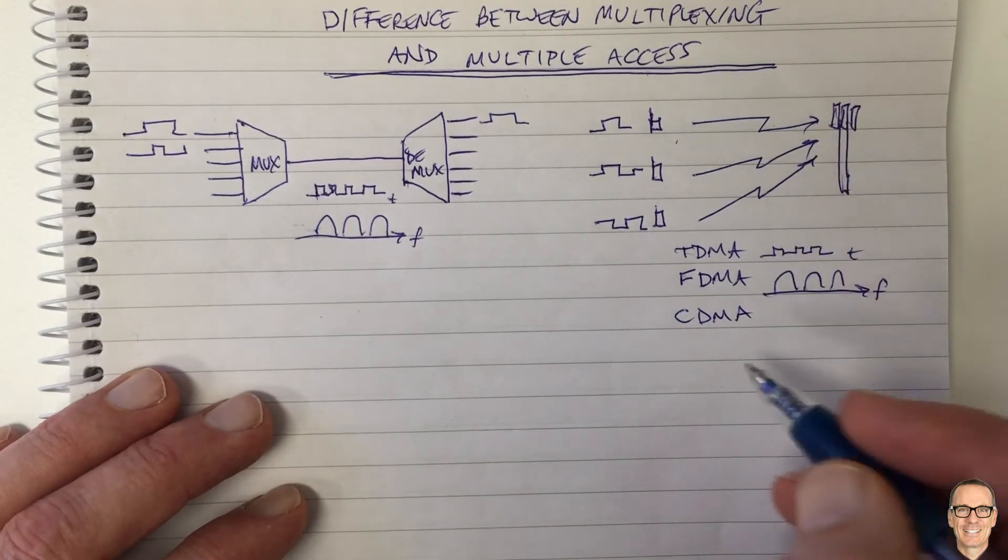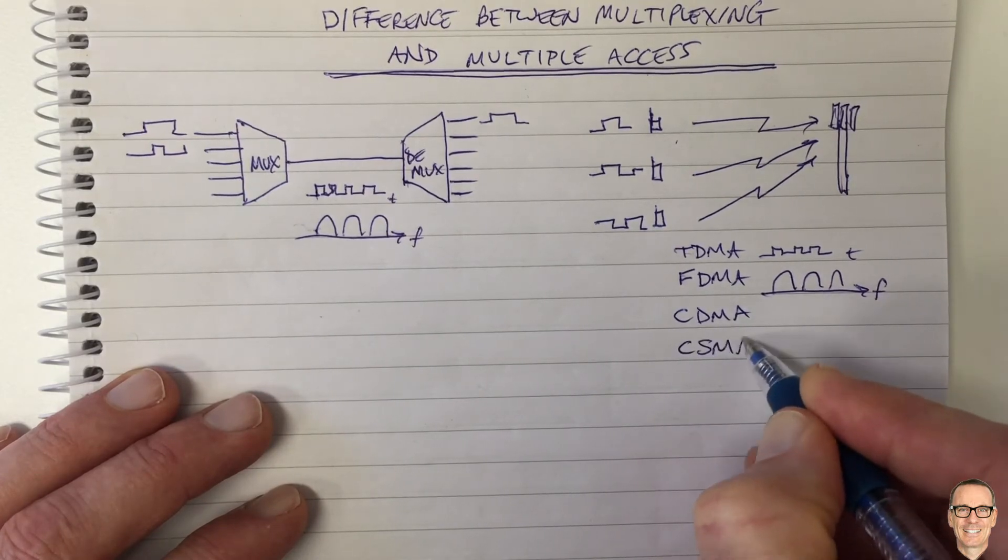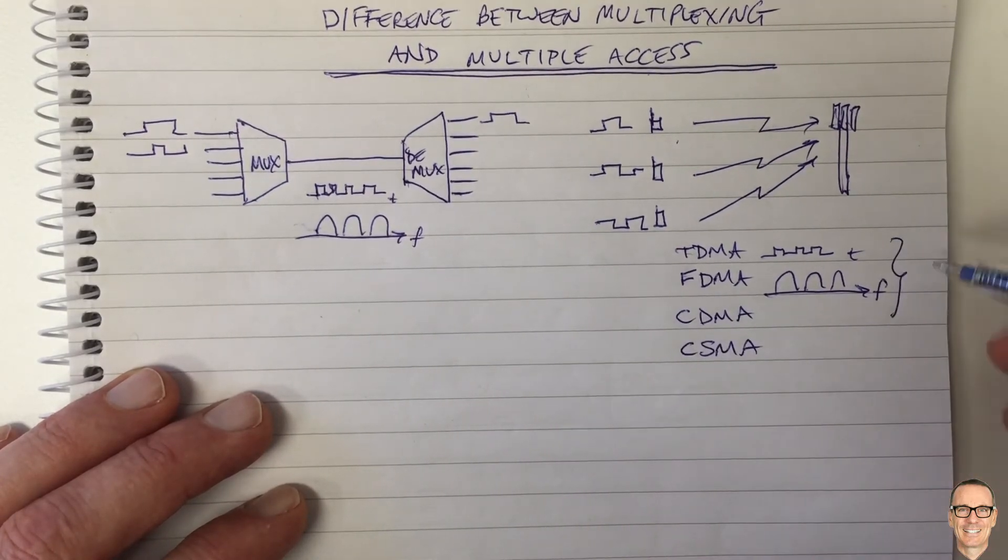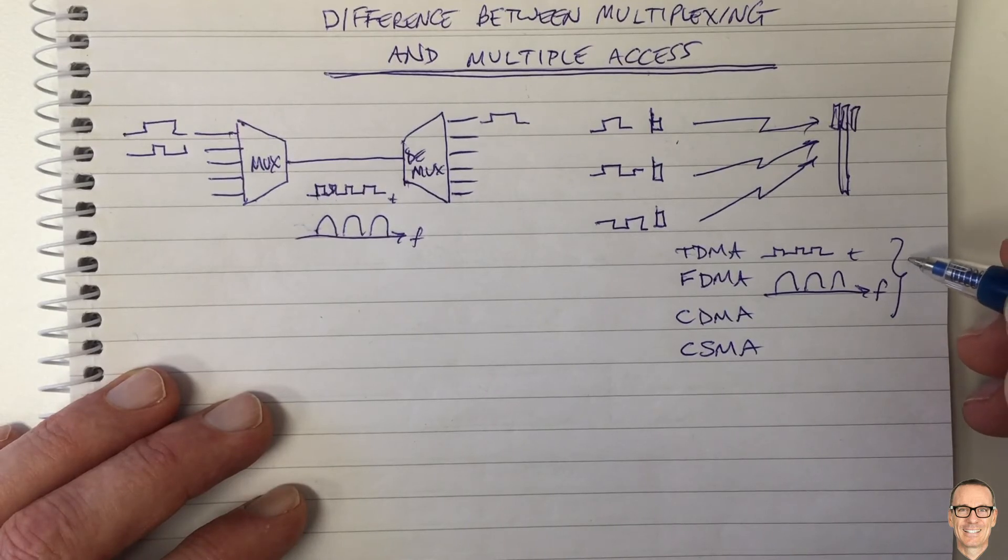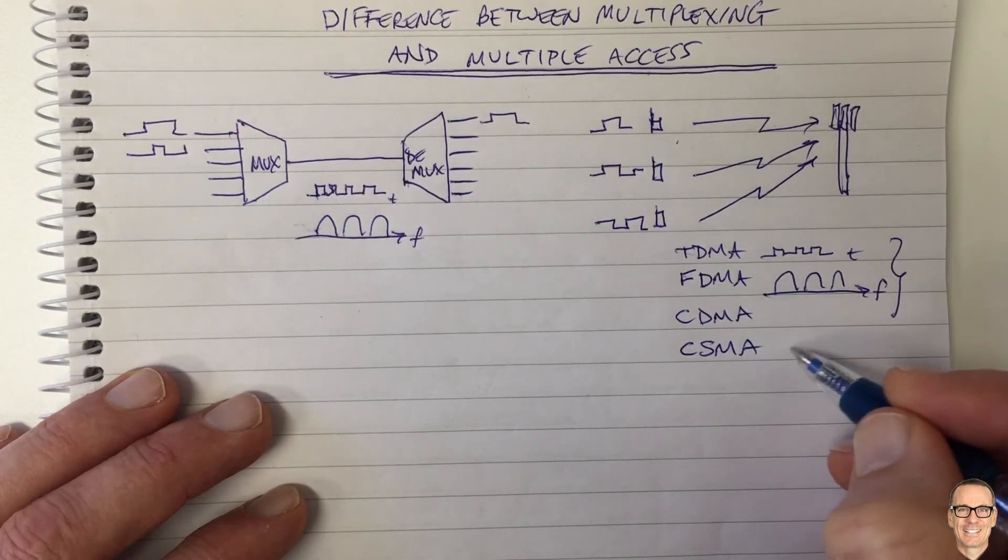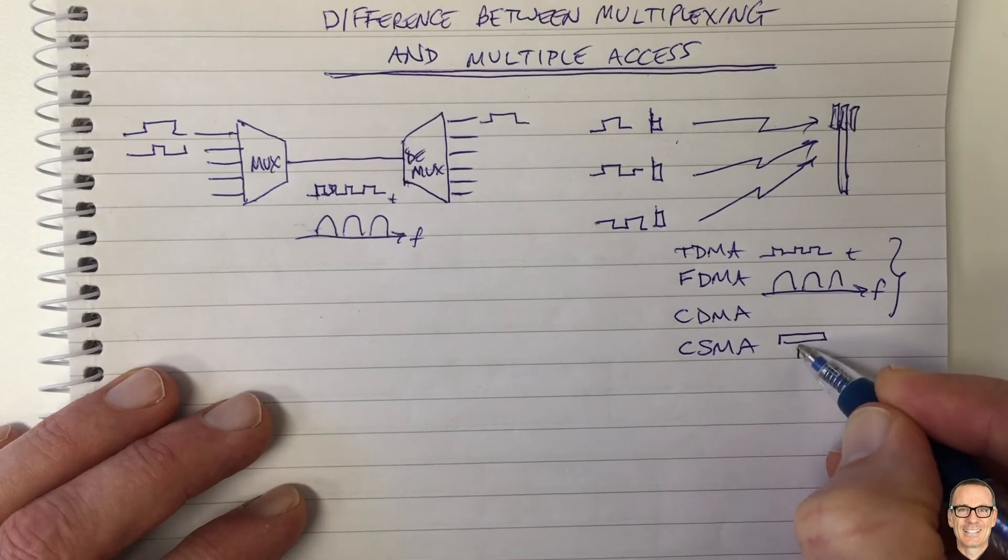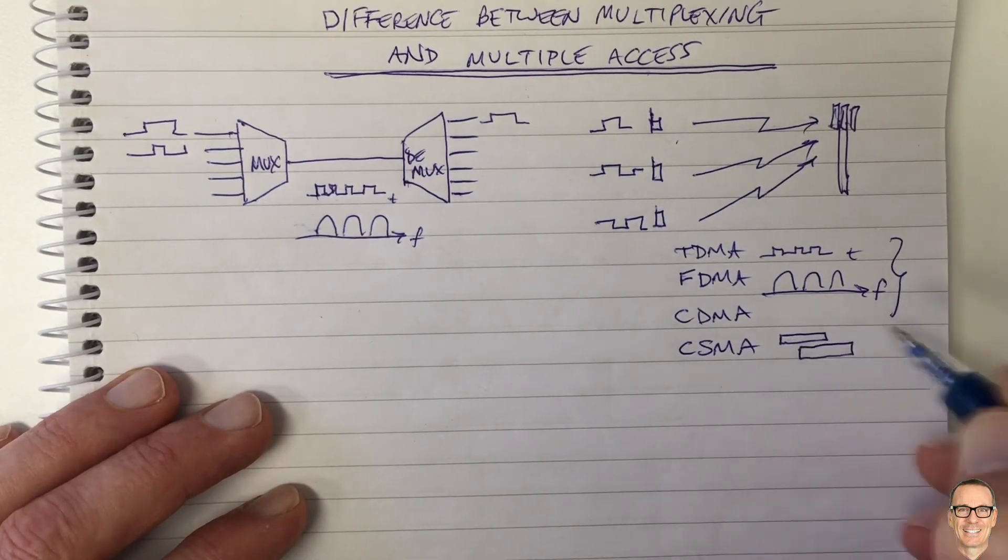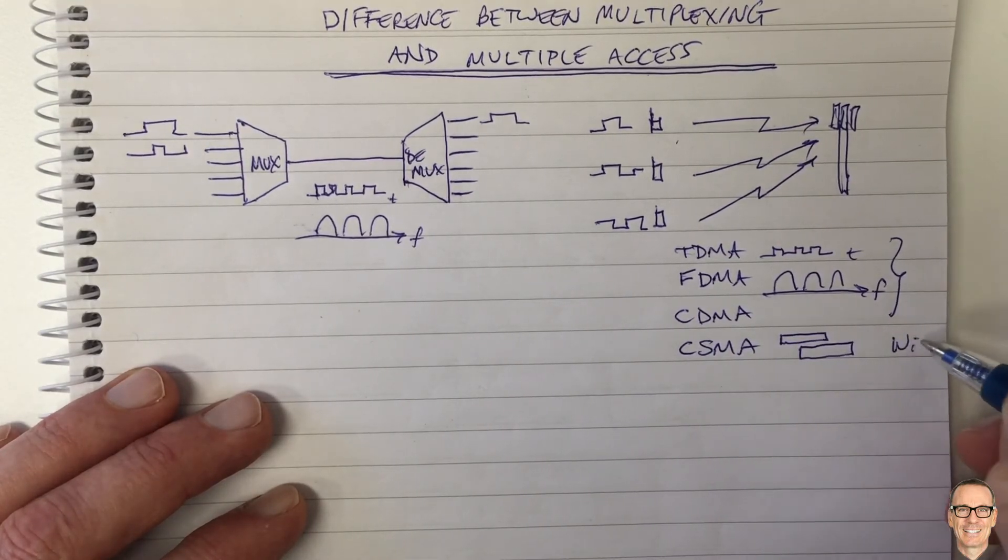Or we could have an uncoordinated one, like carrier sense multiple access. These coordinated ones are used in cellular. And with carrier sense multiple access, where you sense whether a carrier is active and then you send a packet, you could have collisions. And this is used in Wi-Fi.